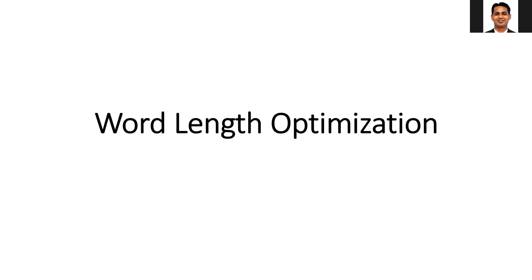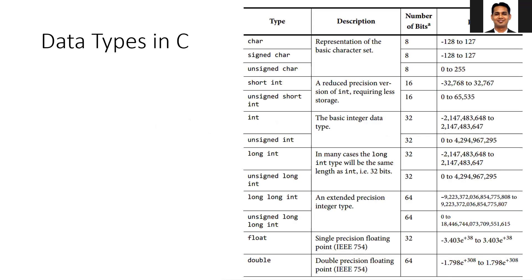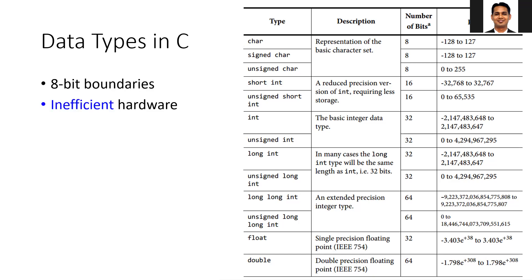Now, we are going to discuss how we can select the appropriate word length in Vivado HLS. In conventional C language, you have fixed data types — character which is 8-bit, short integer which is 16-bit, normal integer which is 32-bit, long long int which is 64-bit, and in floating point you have 32-bit single precision and 64-bit double precision floating point.